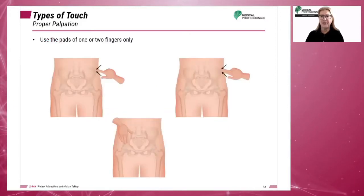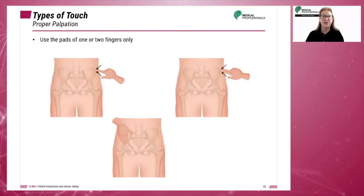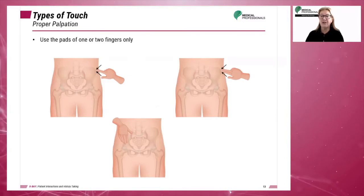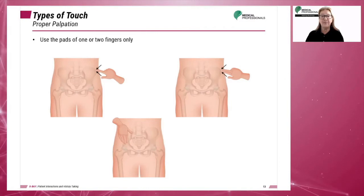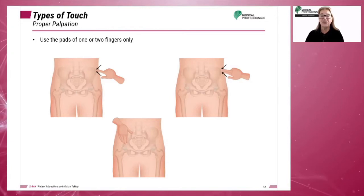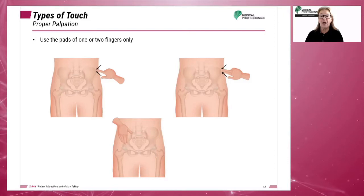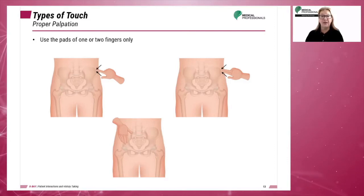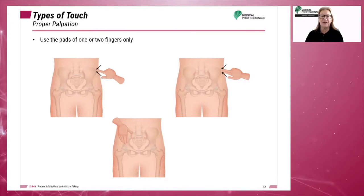In searching for bony landmarks, the technologist will palpate the patient's body. Proper palpation is achieved by using the pads of one or two fingertips to localize the correct body part. The technologist should never use several fingers or the entire palm during palpation, and should never poke the patient with the tip of a finger.